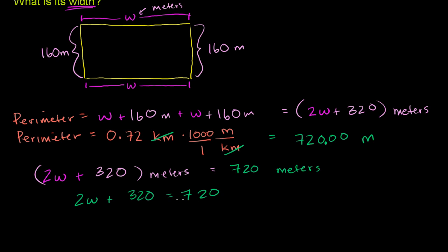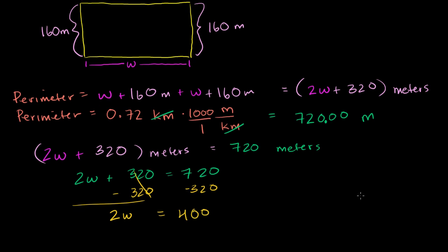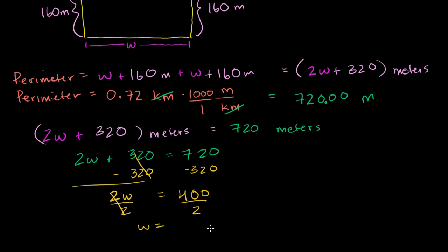We can subtract 320 from both sides of this equation. Remember, an equation saying that is equal to that. If we want them both always to be equal, whatever we do to the left-hand side, we have to do the right-hand side. So we subtract 320 from both sides. The left-hand side, that cancels out. Well, that's why we subtracted 320, and you just have left two times the width, is equal to 720 minus 320 is 400. Now you can divide both sides of this by 2, and then you're left with w is equal to 400 over 2, which is 200.